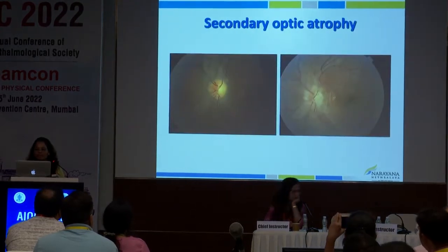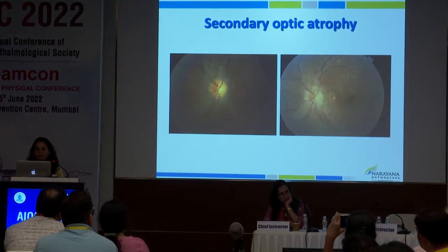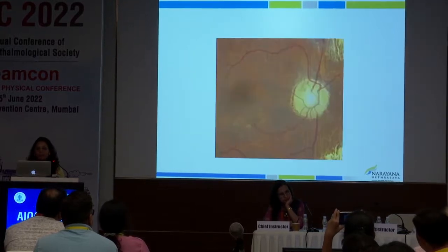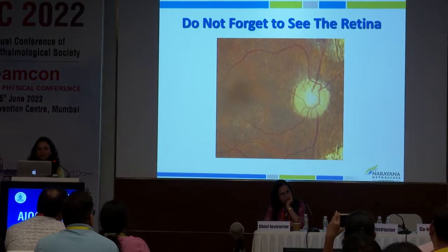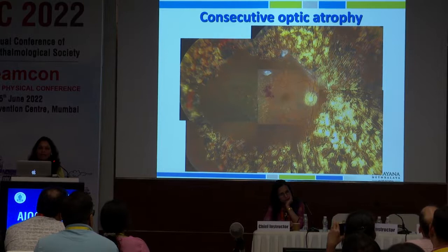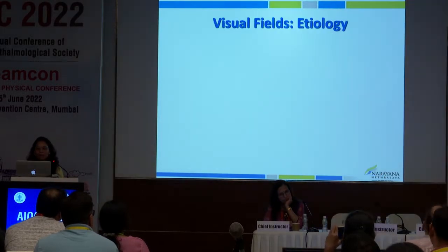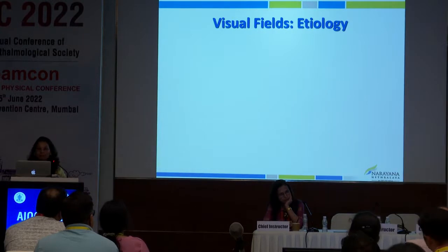Secondary optic atrophy shows muddiness around the optic nerve head, indicating post-papilledema change. Always look beyond the disc — do not forget to examine the retina. For example, a patient with an entire laser scar from PRP can develop consecutive optic atrophy. Once you've evaluated the disc for optic atrophy, assess the visual fields.